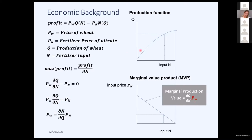The marginal value of product means: when you increase one kilogram of this input unit, what additional output can be sold to the market — times the price of this product, in this case wheat. That is the marginal production value. And when maximizing profits using this first derivative, we know that this should be equal to the input price.